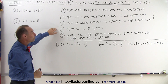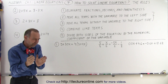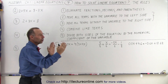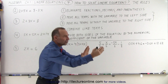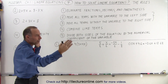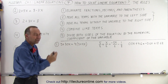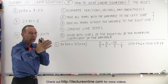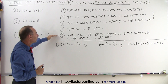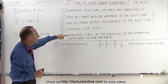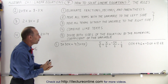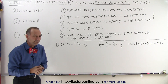Next, since we now have all the terms with the variable on one side of the equation and all the numbers on the other side, we combine like terms — we add all the terms on the left side and all the terms on the right side. And finally, we divide both sides of the equation by the numerical coefficient of the variable.